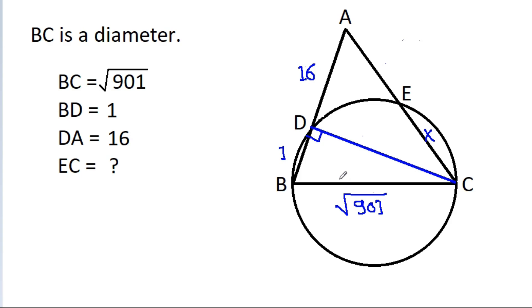And now if we use Pythagoras theorem in triangle BDC, then this length is root 901 and this length is 1, so this length will be 30.